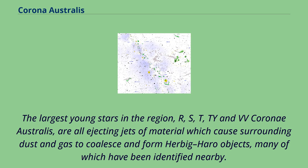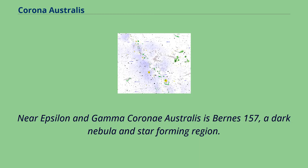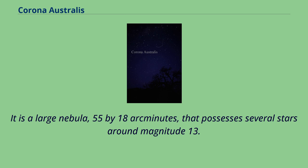Lying adjacent to the nebulosities is the globular cluster NGC 6723, which is actually in the neighboring constellation of Sagittarius and is much further away. Near Epsilon and Gamma Coroni Australis is Barnard 157, a dark nebula and star-forming region. It is a large nebula, 55 by 18 arcminutes, that possesses several stars around magnitude 13, dimmed by up to 8 magnitudes by its dust clouds.